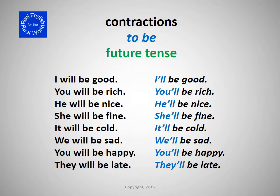Contractions to be in the future tense. I will be good. I'll be good. You will be rich. You'll be rich. He will be nice. He'll be nice.